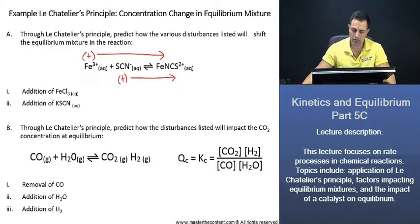Now, if we take a look here at B. Through Le Chatelier's principle, predict how the disturbances listed will impact the carbon dioxide concentration at equilibrium.